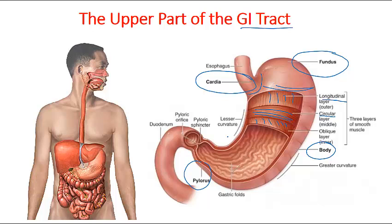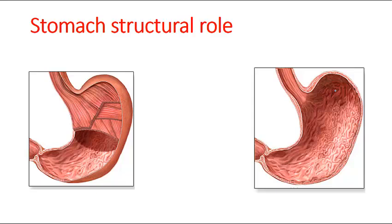The muscularis externa layer of the stomach is unique because it carries three different muscle layers. Another very important structure of the stomach is its inner folds, which allow the stomach to increase its surface area and expand based on the amount of food received. These regions are known as rugae — specific internal folds found in the stomach.